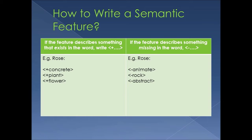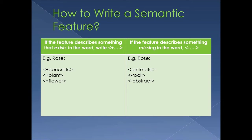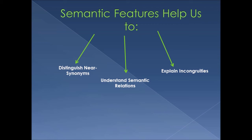For features that are missing in the word, you write brackets with a minus. For example, if you have a rose and it's not animate — animate means it moves — the rose obviously can't move on its own, so it's minus animate. Minus rock means it's not a rock. And minus abstract means it's not abstract; since it's concrete, it isn't abstract.